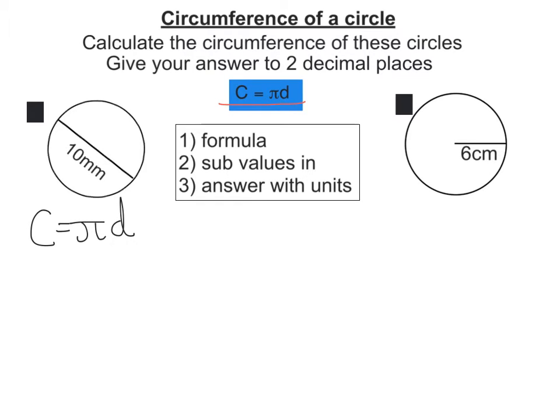Then we sub our values in, so C is equal to pi times the diameter. Well here is the diameter here, that's 10. So C equals π times 10.